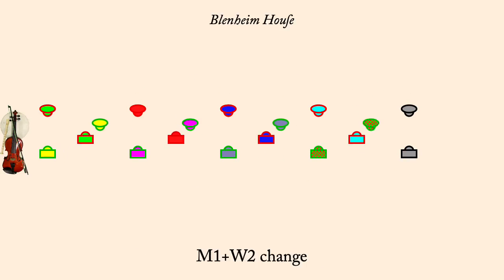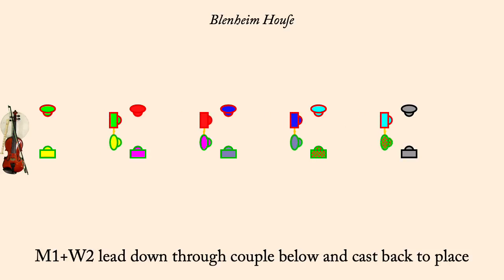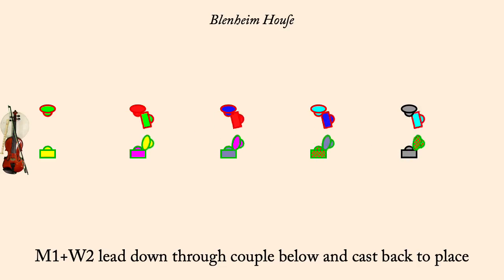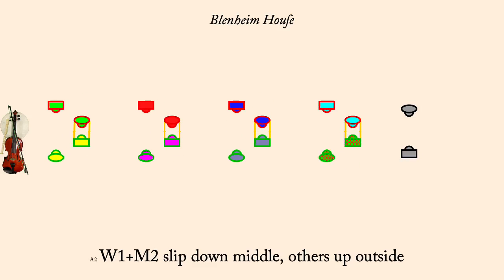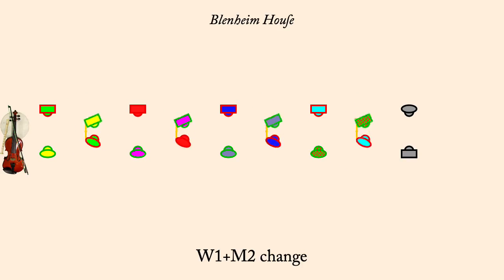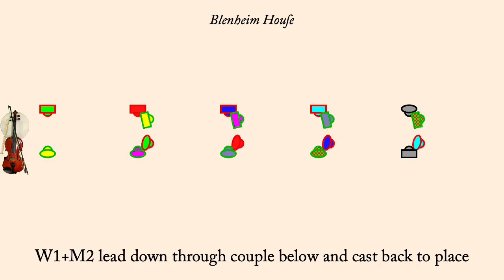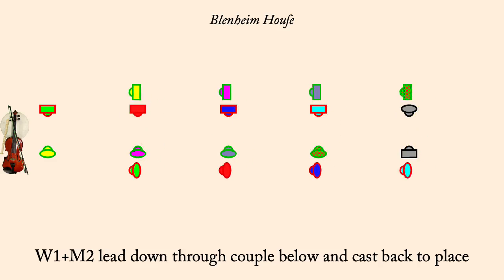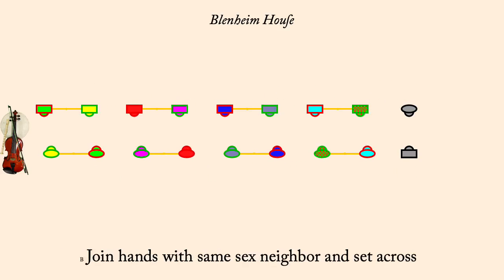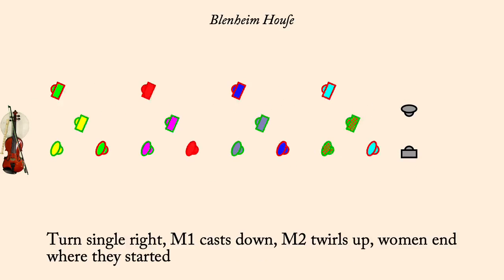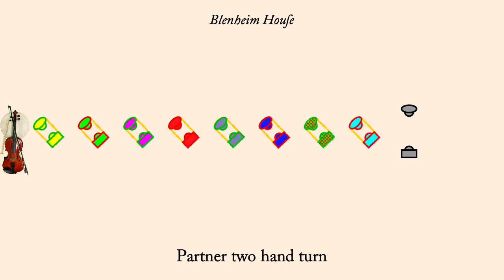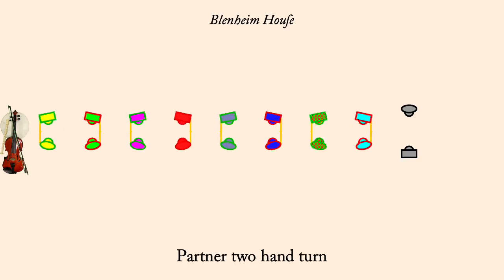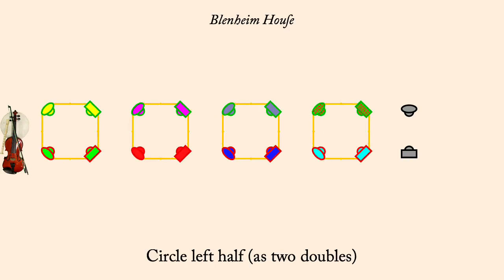They lead below next couple and cast back to place. Top couple slip down, bottom up. Woman one, man two change. They lead below next couple and cast back to place. Set. Turn single right. Partner two-hand turn. Circle left half. One's long cast down as twos lead up.